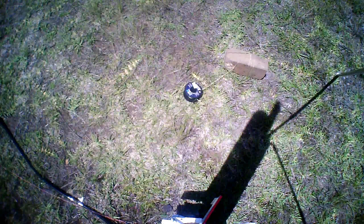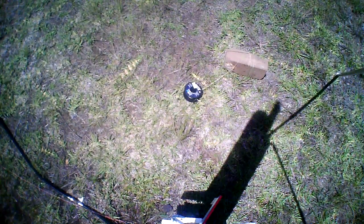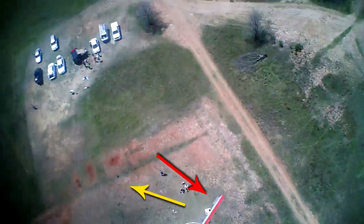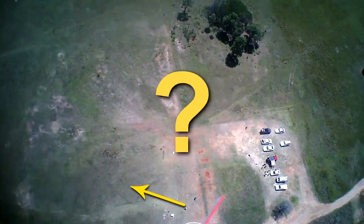But hang on, the rocket rotated in the opposite direction than what we expected with the tabs. This is where the tab is, but the rocket's rolling towards it. What the heck's going on?